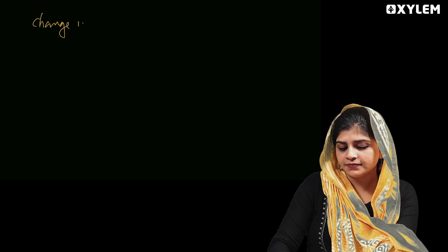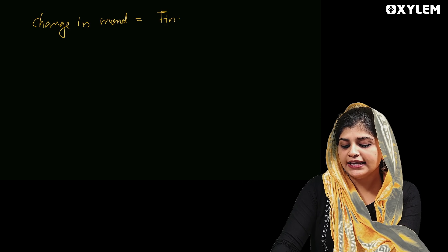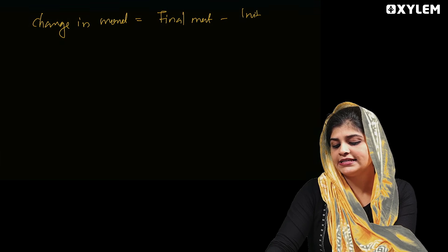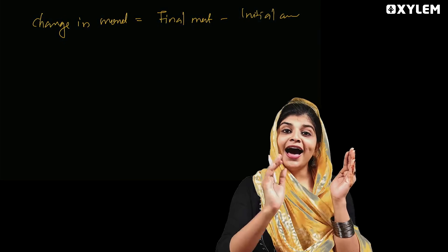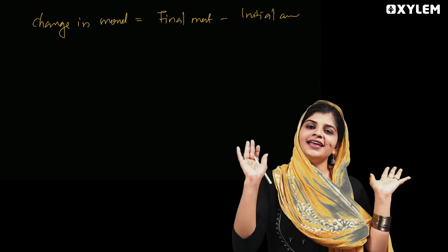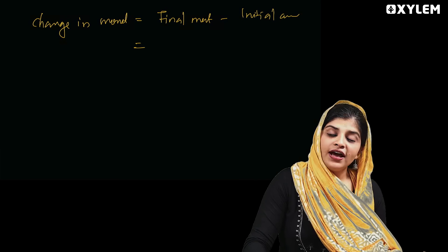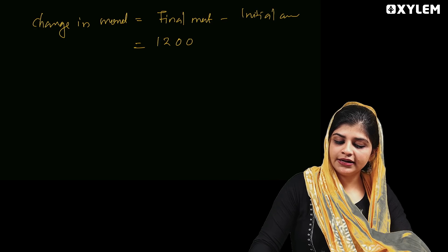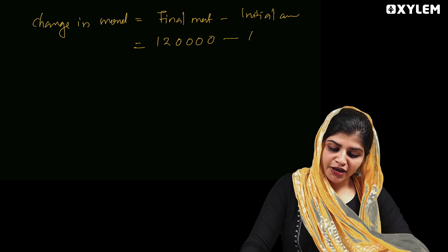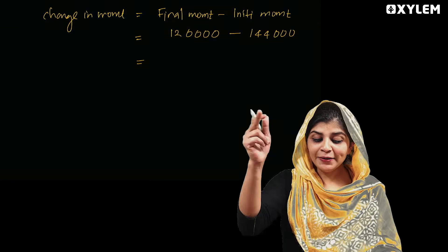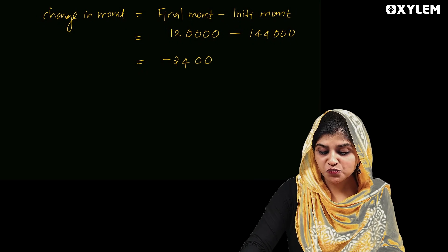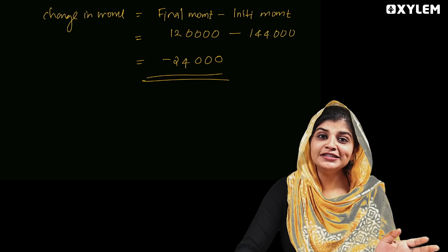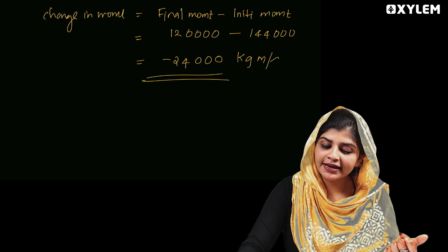The change in momentum is equal to final momentum minus initial momentum. That is 120,000 minus 144,000, which equals minus 24,000 kilogram meter per second.